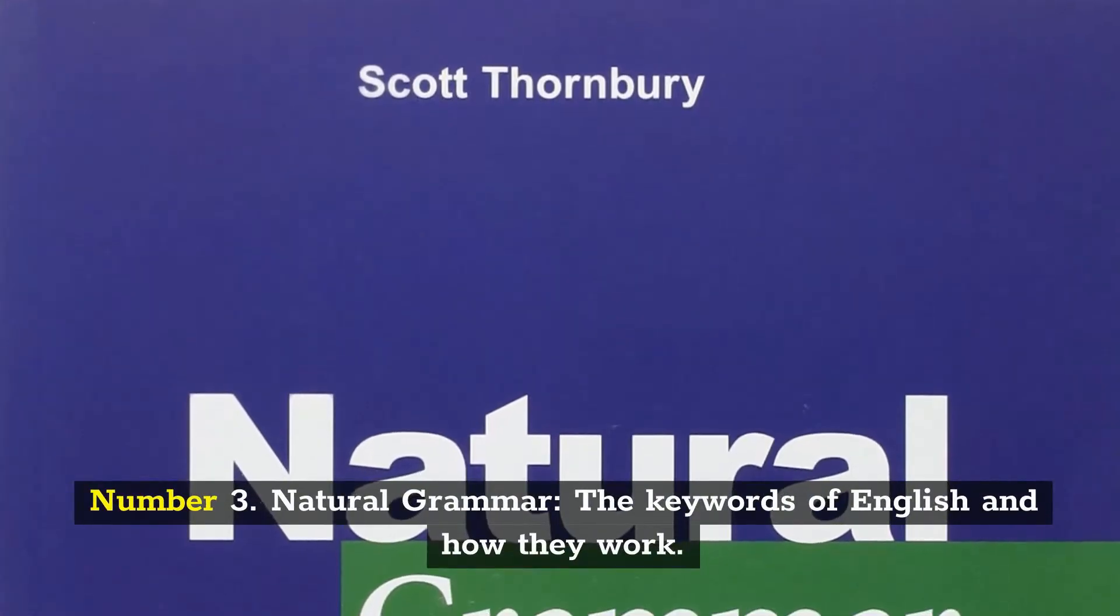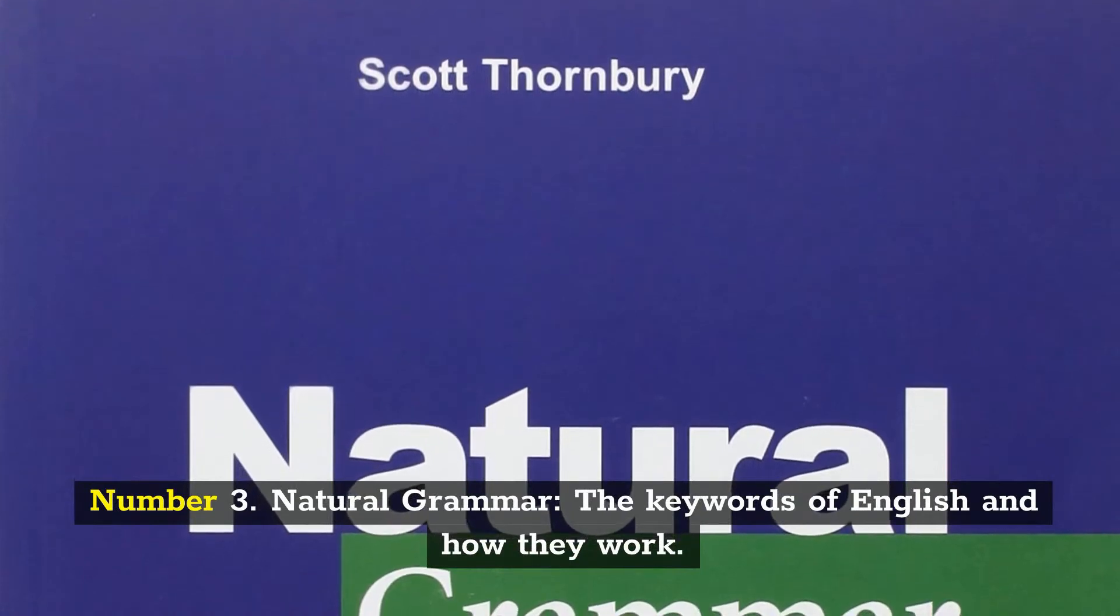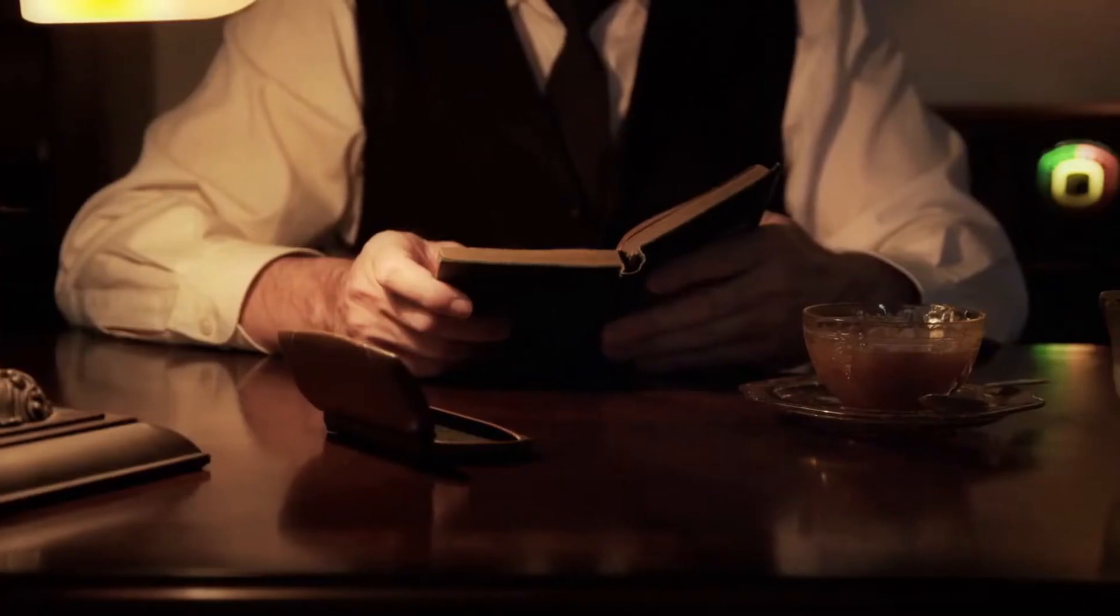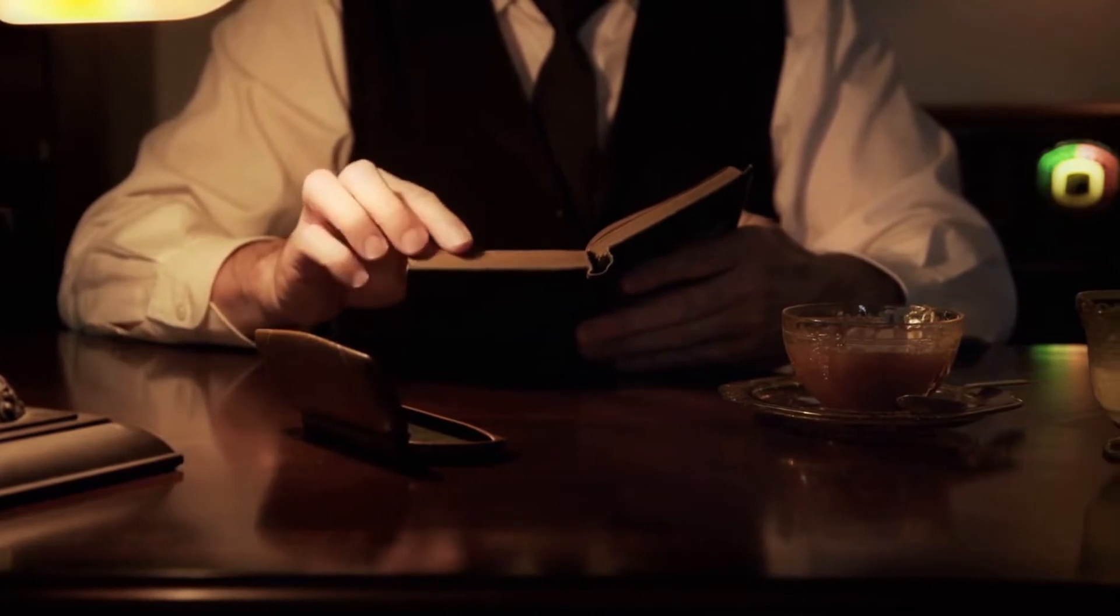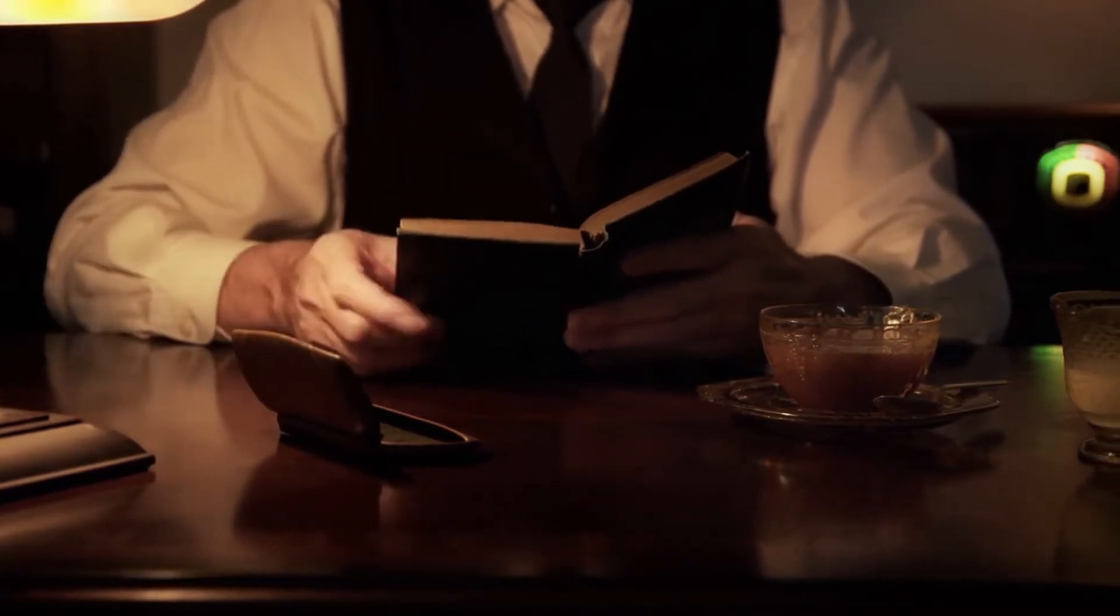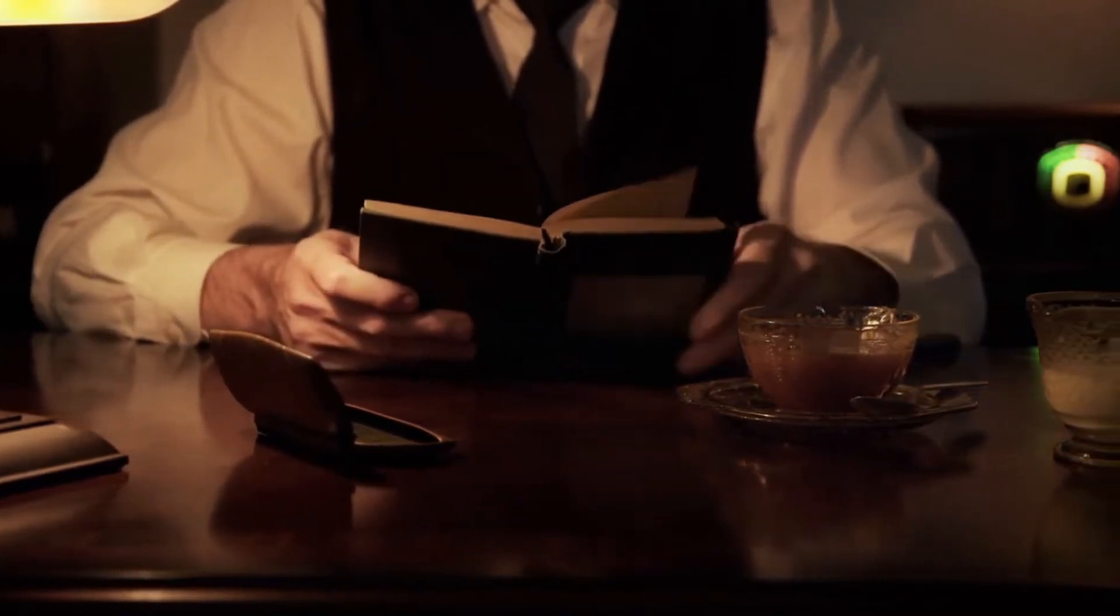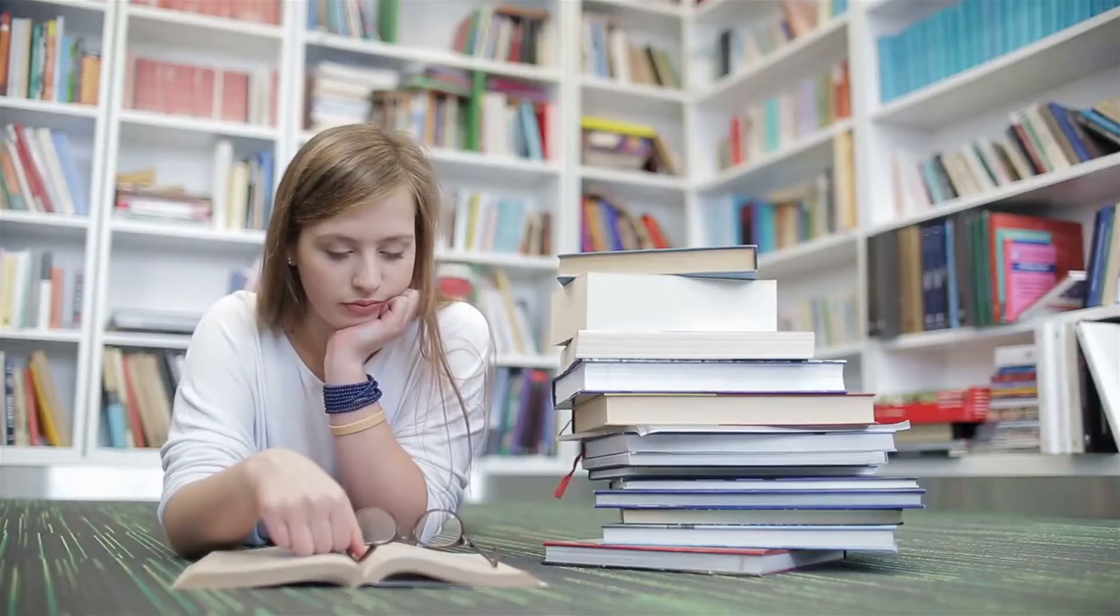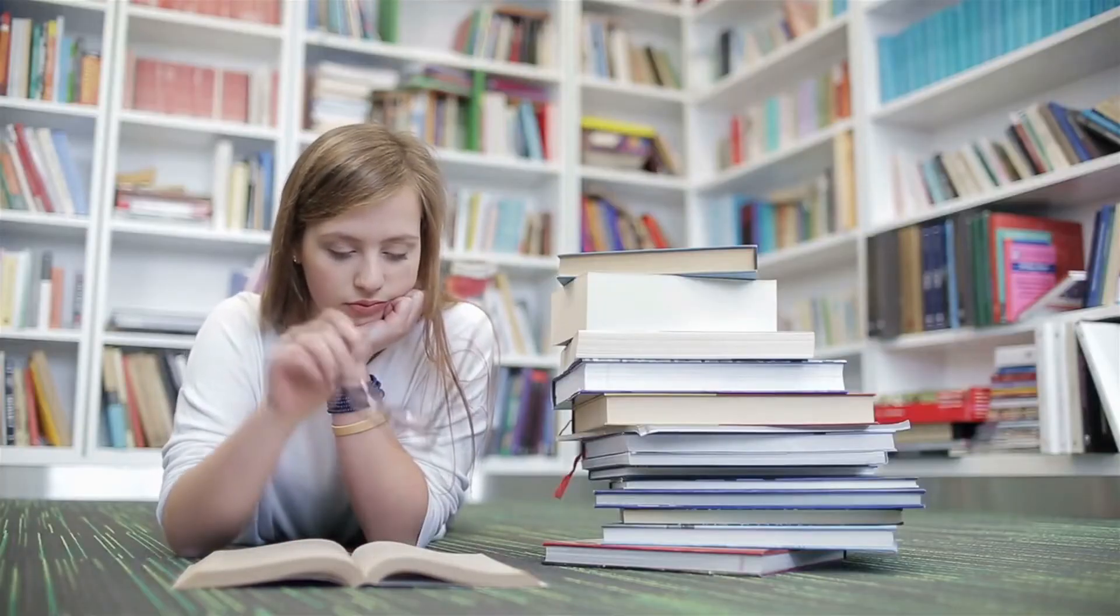Number three: Natural Grammar, The Keywords of English and How They Work. Each chapter of the book, which was written by Scott Thornbury, contains examples, standard phrases, idioms, and phrasal verbs. Additional examples such as how to use English's competitive words and everyday talks are also provided.